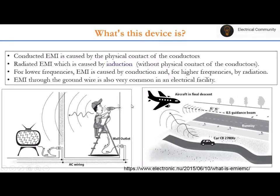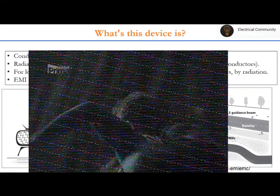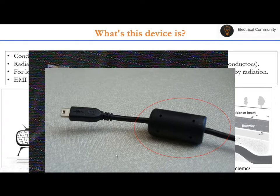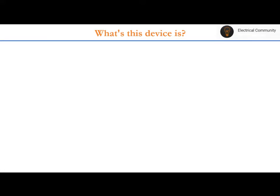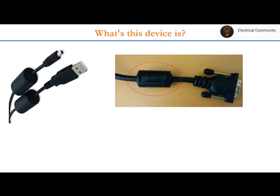So we need to protect all devices whether from conducted EMI or radiated EMI. To protect against conducted EMI, we use an EMI filter, which filters out low-frequency noise disturbances present in the line wire. To protect against radiated EMI, we go for shielding the device. We will cover shielding in another lecture.